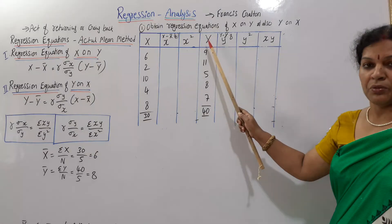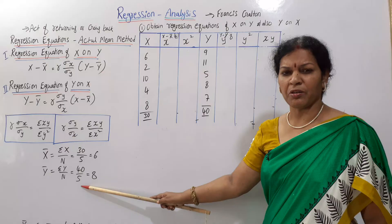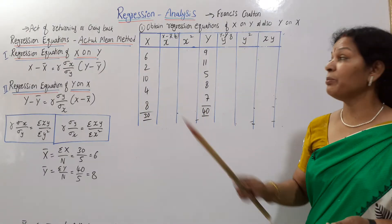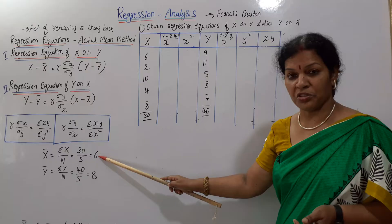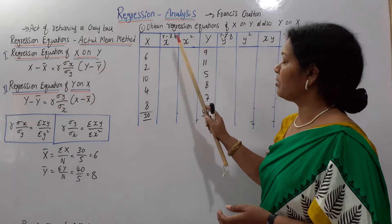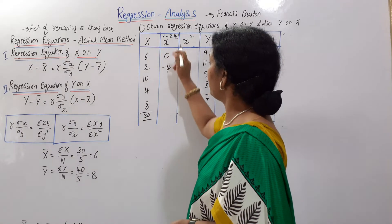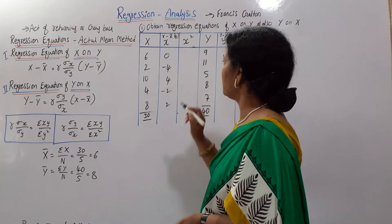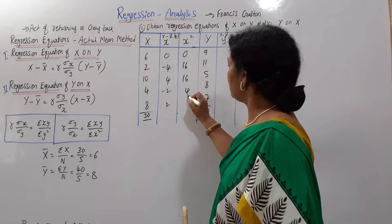Now ȳ: the formula is σy divided by n. The total of y is 40, divided by 5 equals 8. So ȳ equals 8. Now compute x minus x̄ for each value. With x̄ equal to 6: 6−6=0, 10−6=4, 4−6=−2, 8−6=2. The squared deviations give σx² equal to 0+16+4+4+16 = 40.